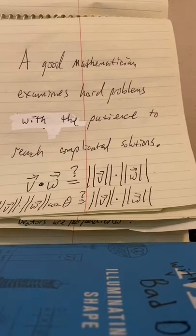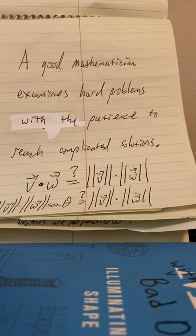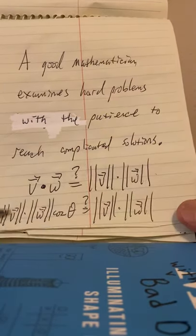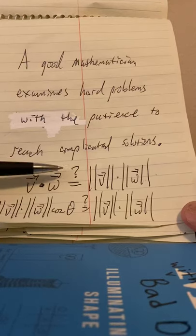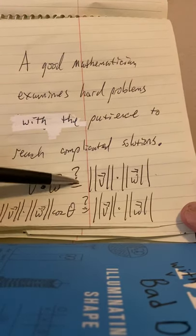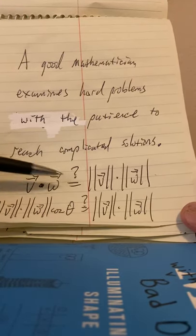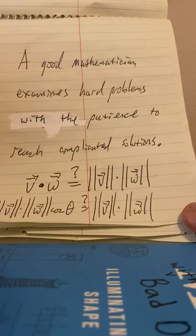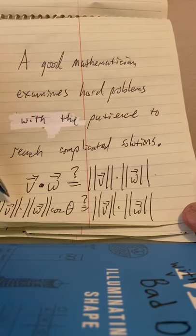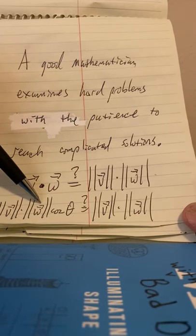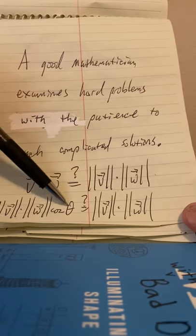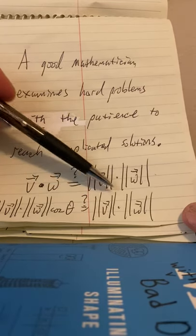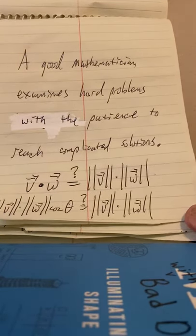A good mathematician examines hard problems with the patience to reach complicated solutions. A good mathematician will look at a problem, say like this one. When does the dot product simply equal, when is this true, when does the dot product simply equal the product of the magnitudes of the two vectors? Well, the dot product is the magnitude of v times the magnitude of w times cosine of the angle between them. So when does that equal simply the product of the two magnitudes?